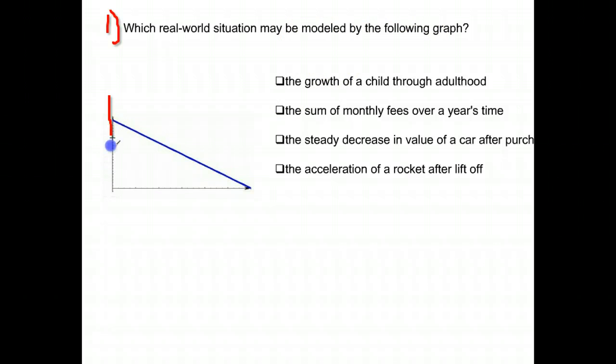Now notice in the graph we have our x and our y-axis. Those are just our standard things, and this is our line, the blue line. What I want you to notice is what's happening to the line. The further it goes to the right, it's going down or decreasing. So this is a decreasing line, negative.